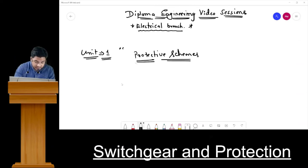Then we have methods of neutral grounding, how we can ensure the neutral grounding and how we can be very precise. Whenever there is a fault and things are supposed to take place, we should be prepared for that situation. These all things I am going to cover in Unit 1 - protective schemes. Now if I talk about Unit 2...